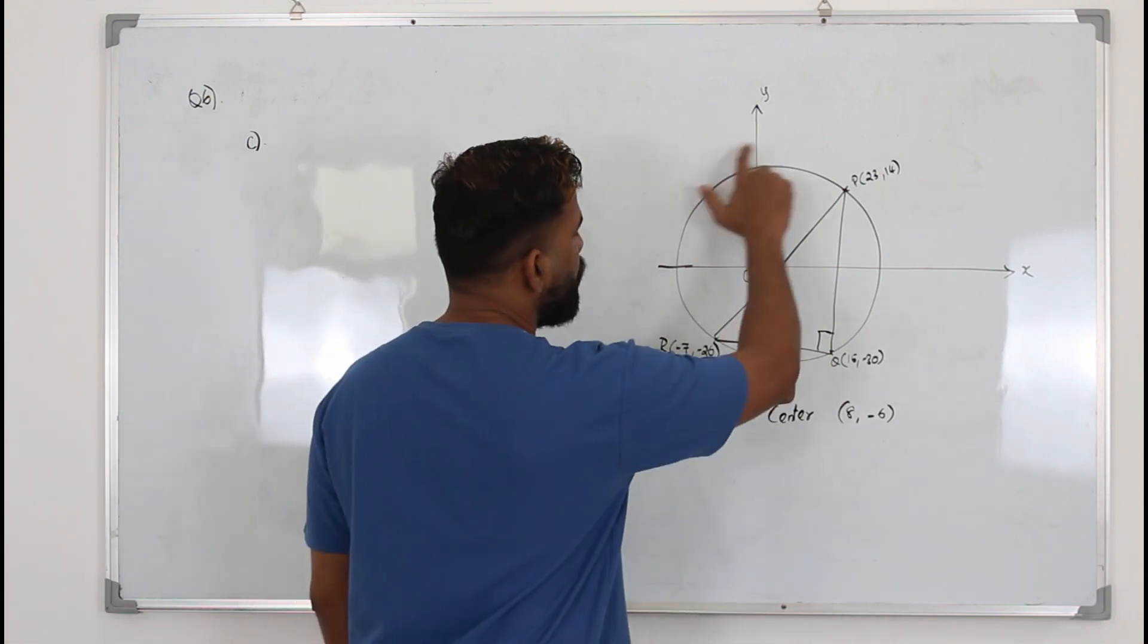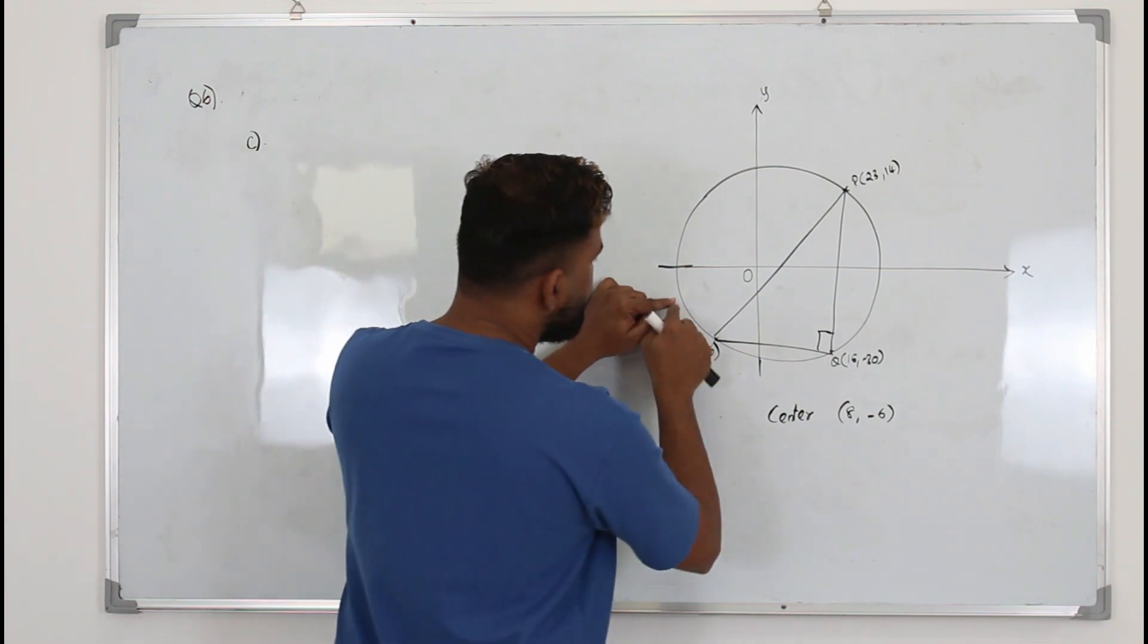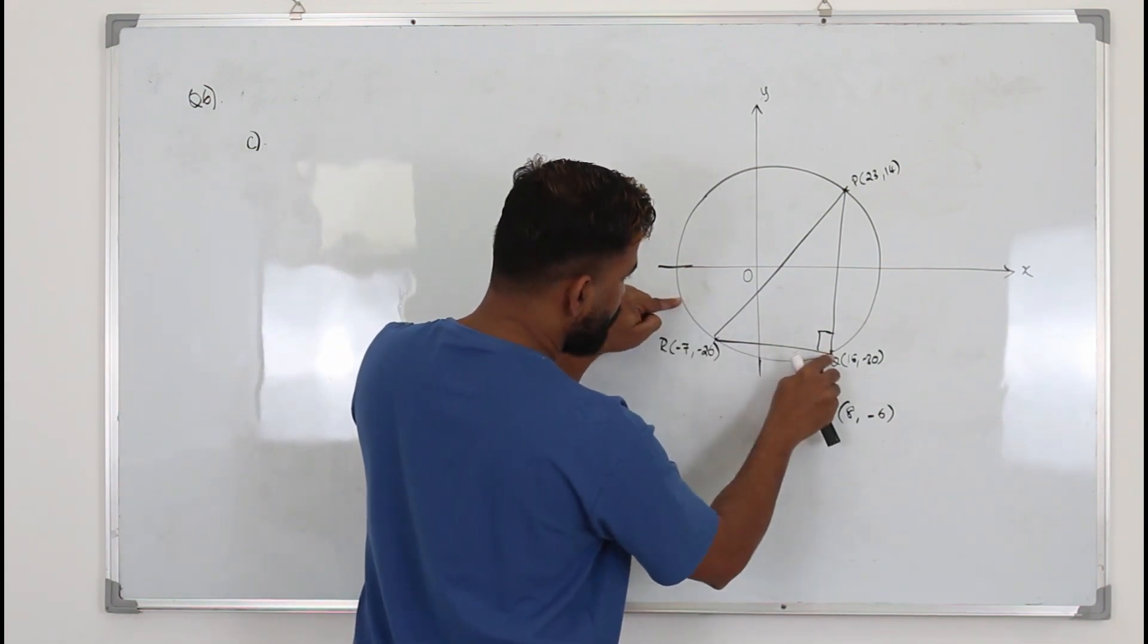If you take point S, the point S can be anywhere. If the distance between, let's say the S is here, the distance between the Q and S is this, right?